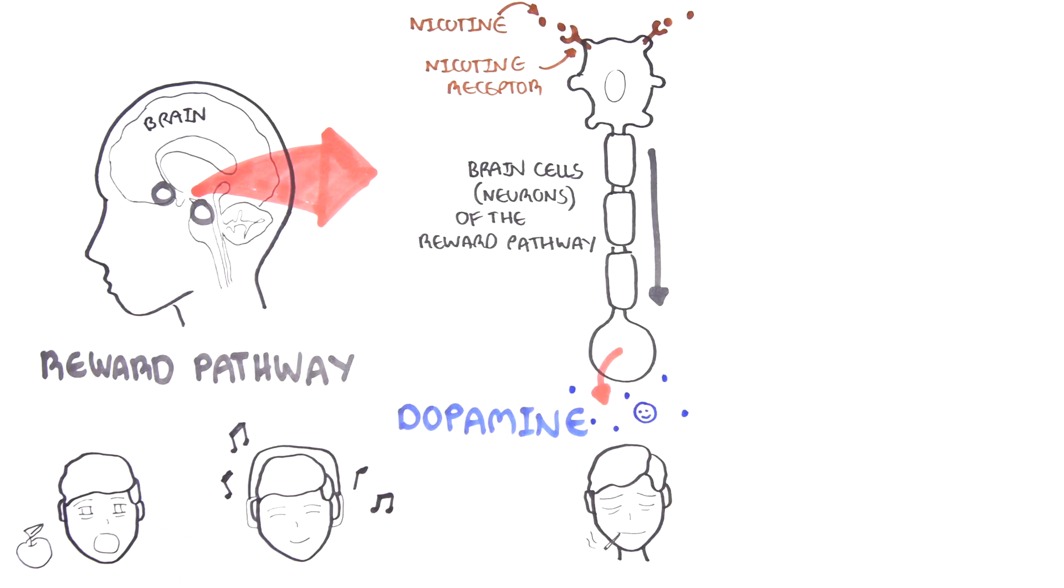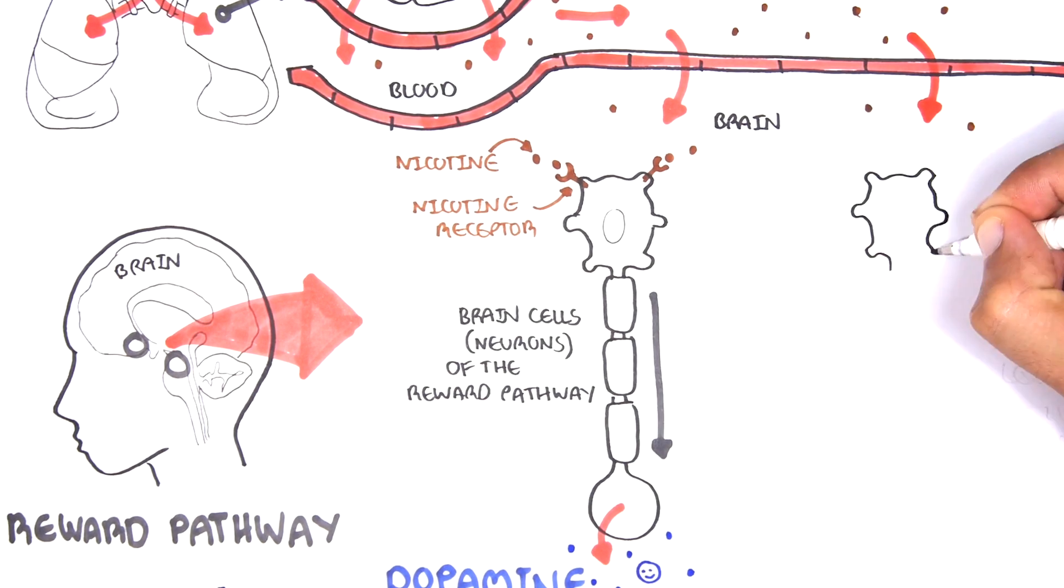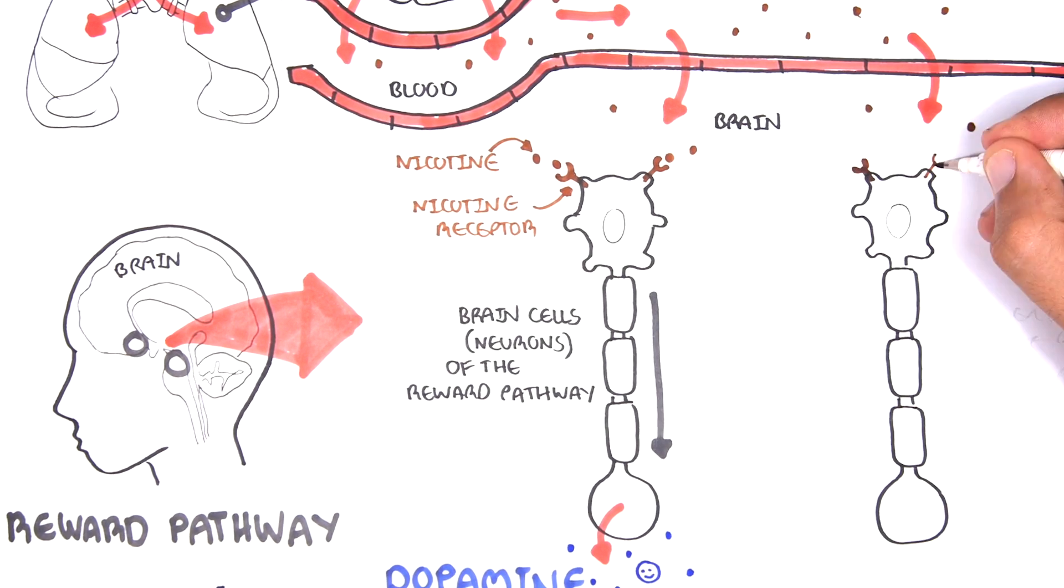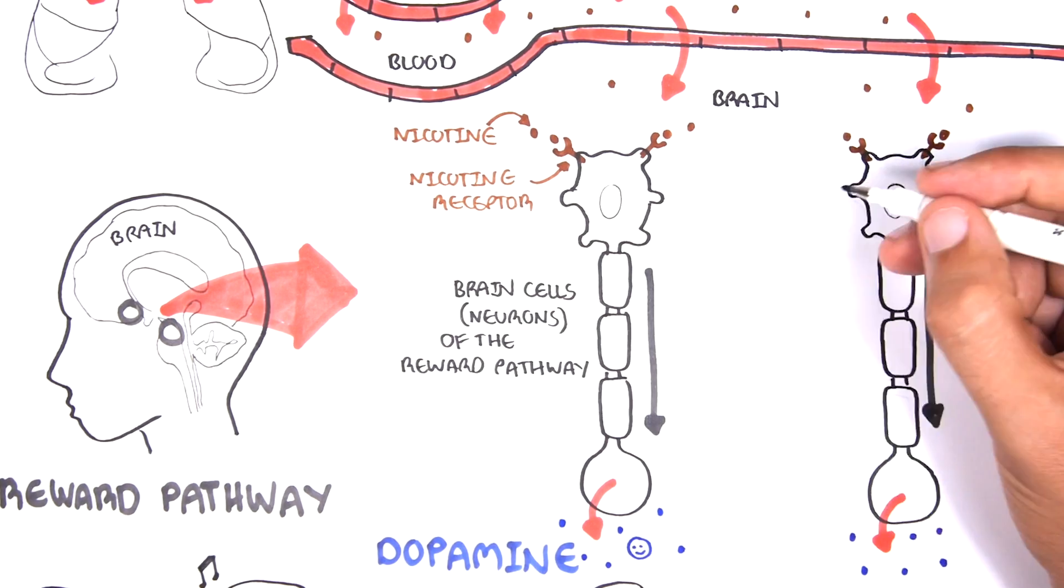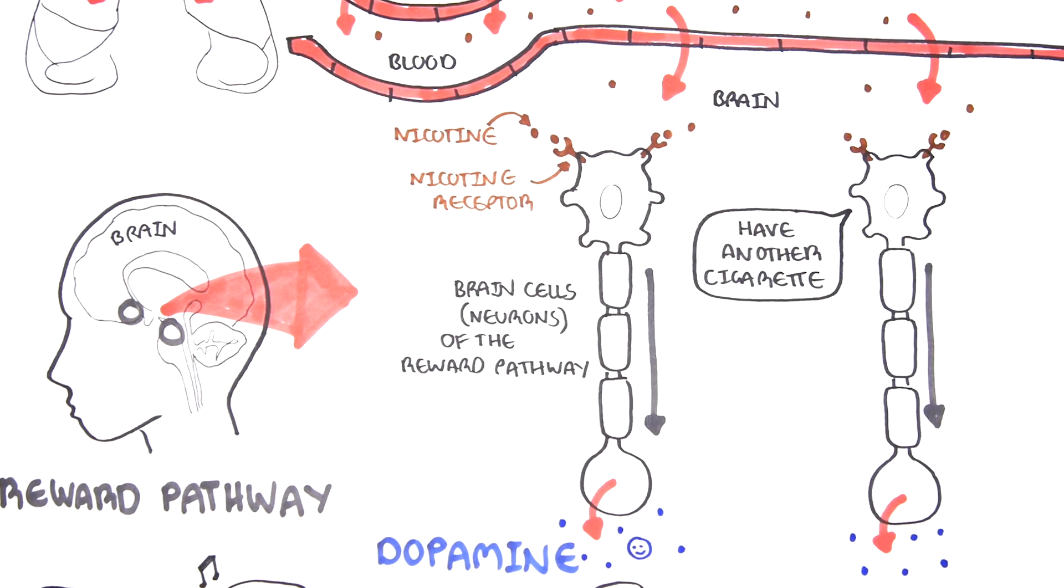However, too much repetitive stimulation of the reward system can be dangerous, especially with nicotine. Nicotine takes over the reward pathway, attaching to nicotine receptors to release dopamine, making the brain crave another cigarette.